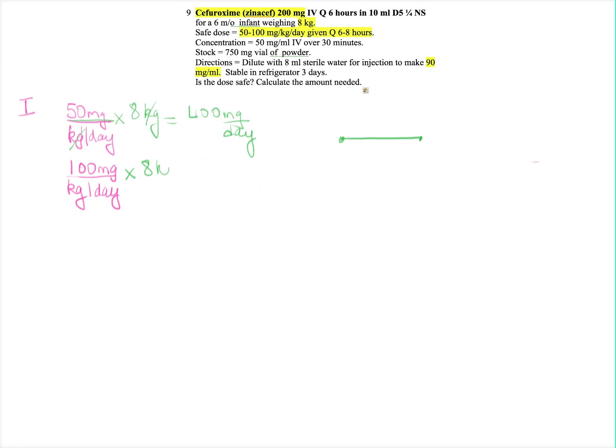So that is the 50 milligrams lower end range for this patient. You do the same with the 100 milligrams where you plug in the patient's weight, so you should end up getting 800 milligrams per day. What this is telling me is that this patient, and again I love my number line, so this tells me that my patient who weighs eight kilos can receive 400 to 800 milligrams per day as a safe dose range.